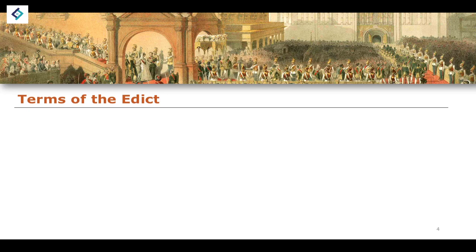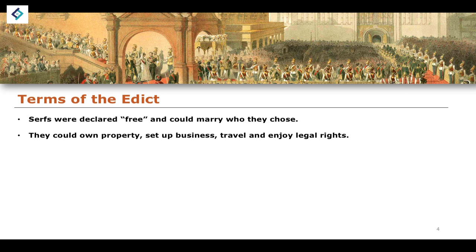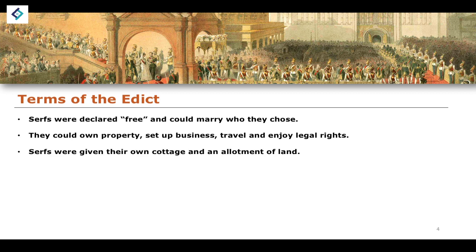What were the terms of the Edict? Serfs were to be declared free and could therefore marry who they chose, own property, set up businesses, travel, and enjoy all legal rights. Travel was a very important one, given that one of the main features of serfdom was limiting an individual's ability to move away from where they worked. Serfs were also given their own cottage and an allotment of land — they weren't just declared free and left to fend for themselves; they were actually given a certain amount of reparation in terms of a cottage and land.